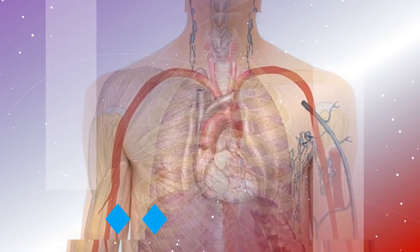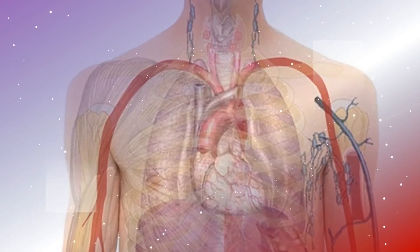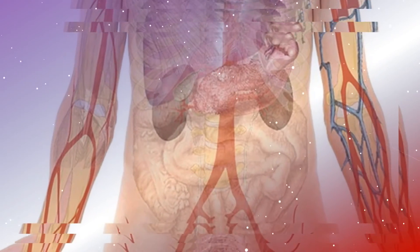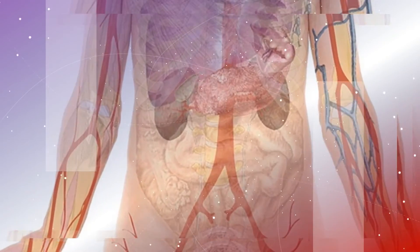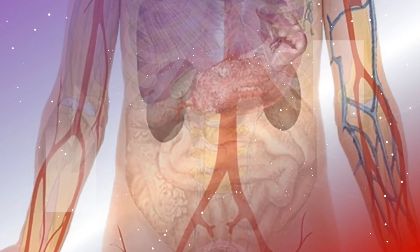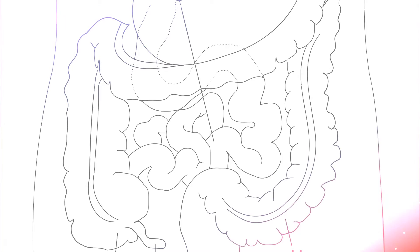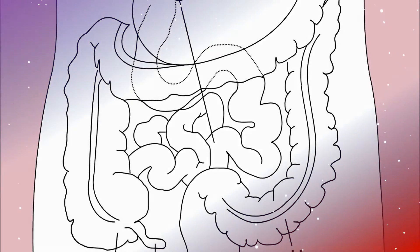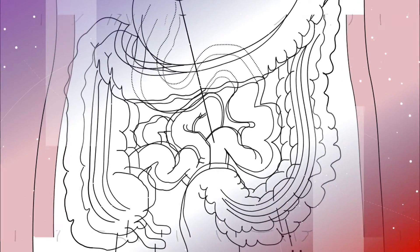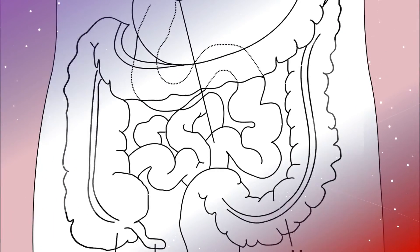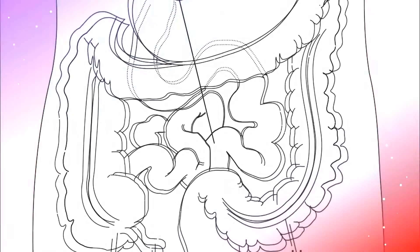3. Gastroduodenal Crohn's Disease. This form of Crohn's Disease involves the stomach and duodenum, which is the first part of the small intestine. People with this type of Crohn's Disease suffer nausea, weight loss, and loss of appetite. In addition, if the narrow segments of bowel are obstructed, they experience vomiting.